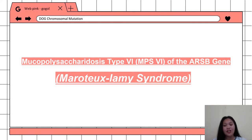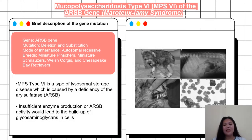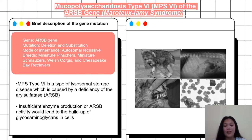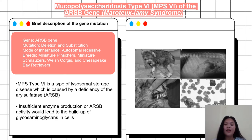Proceeding to the second example of gene mutation present in dogs: the mucopolysaccharidosis type 6 or MPS6 of the ARSB gene, also known as the Maroteaux-Lamy syndrome. This type of gene mutation specifically affects the ARSB gene, which is a protein-coding gene responsible for the production of the enzyme arylsulfatase B, involved in the breaking down of large sugar molecules called glycosaminoglycans in the lysosomes of the cell. MPS type 6 is a lysosomal storage disease caused by the deficiency of the ARSB enzyme, leading to the buildup of glycosaminoglycans, causing the cell to exhibit abnormal functions and eventually death. It also has an autosomal recessive mode of inheritance, so for the dog to be affected, it must possess two copies of the underlying abnormal gene.